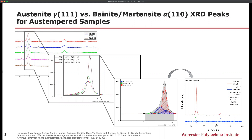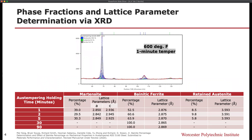As you can see, the Rietveld refinements were applied to the bainite and martensite peaks that overlapped, as well as some of the surrounding austenitic peaks, such that an approximate percentage of each could be derived. This illustrates an example of an austempered sample that was held at 600 degrees Fahrenheit for one minute. The percentages associated with martensite, bainitic ferrite, and retained austenite are shown for various austempering hold times as well.